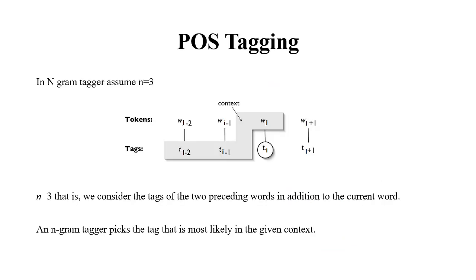Now let's see how language modeling and the Markov assumption can be applied in part-of-speech tagging. POS tagging attaches a part of speech to each word in the sentence, using an N-gram model. Assuming N equals 3 (trigram), to find the POS tag T(i) of word W(i), we consider the previous two words W(i-1) and W(i-2) with their corresponding tags T(i-1) and T(i-2). An N-gram tagger picks the tag most likely given the context.